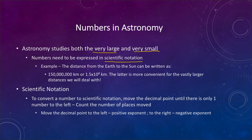What scientists do to write numbers like that is instead of writing out all of those zeros, they move the decimal point so that there is just one nonzero number to the left, and then write the rest as a power of 10, which represents all of those zeros. So we can write 150 million kilometers as 1.5 times 10 to the 8th kilometers, which is really convenient for the incredibly large distances that we will deal with.